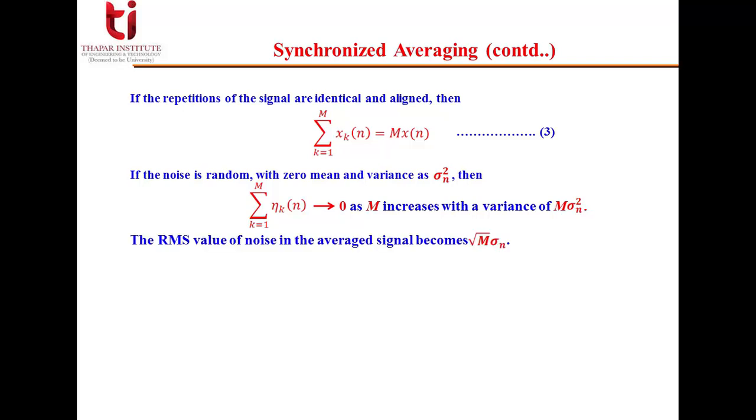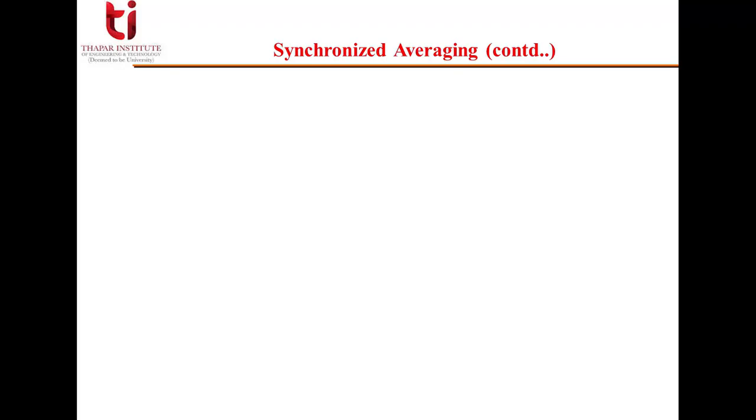The RMS value of noise in the averaged signal now becomes root M times sigma_n. From there we can calculate the SNR, that is signal to noise ratio in the output, that will be given by M divided by root M, equal to root M times the signal to noise ratio in the original uncorrupted signal. So that means by synchronized averaging we are increasing the SNR as we are increasing number of realizations.